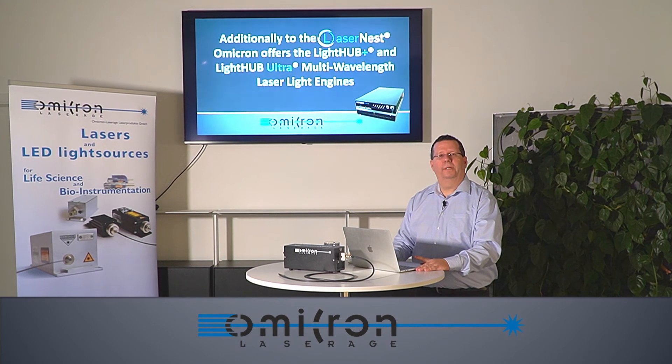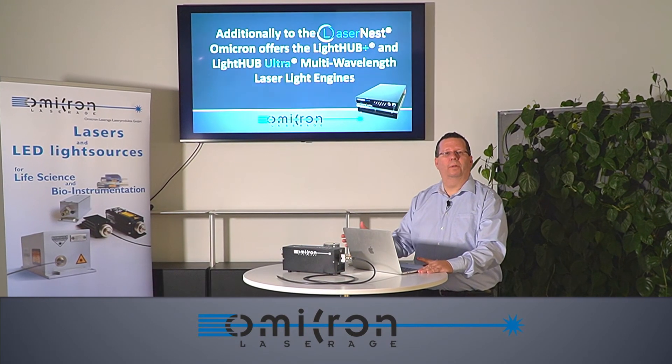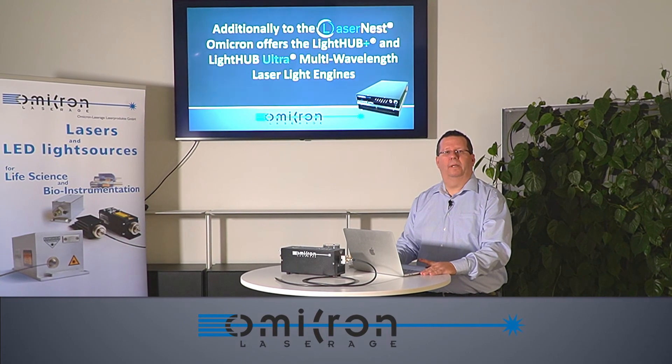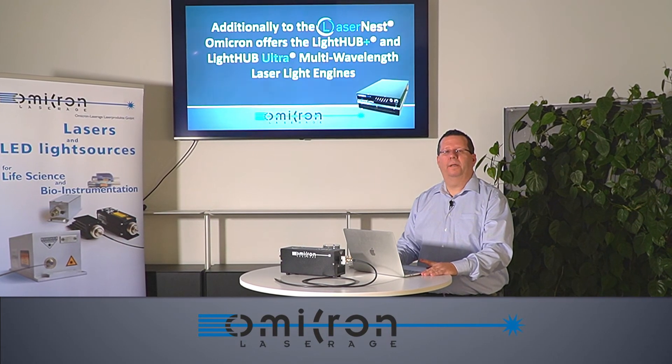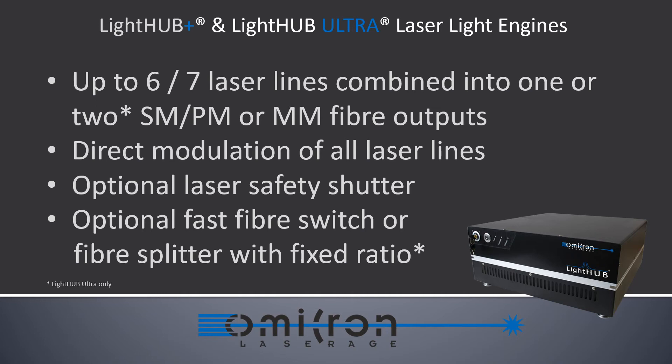Additionally to the single wavelength LaserNest, Omicron offers the multi-wavelength laser light engines LightHub Plus and LightHub Ultra. The LightHub Plus can be equipped with up to six laser lines, the LightHub Ultra with up to seven, which are finally combined into one or two optical fiber outputs.